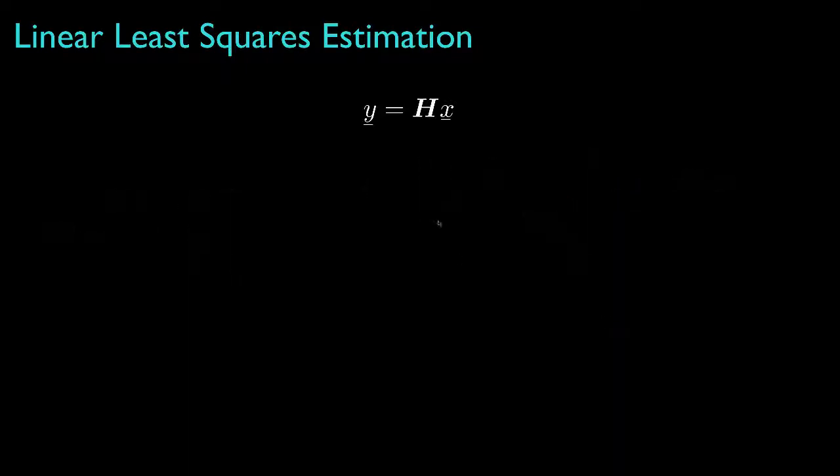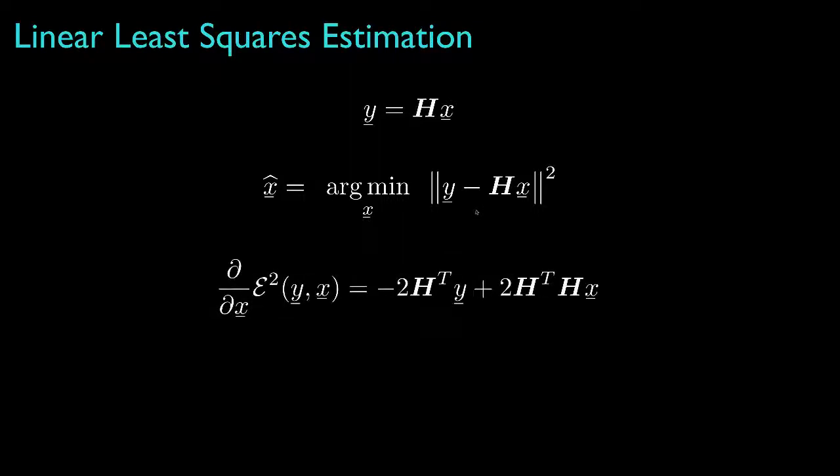Now mathematically, we can derive the form for this estimator as follows. First, we'll define the linear least squares estimator as the solution to the least squares optimization for the linear observation model. Then, because the optimization function is convex, we can find the minimum by setting the gradient to 0, where the squared error is the norm squared of the difference between the observation and the prediction for a particular parameter vector.